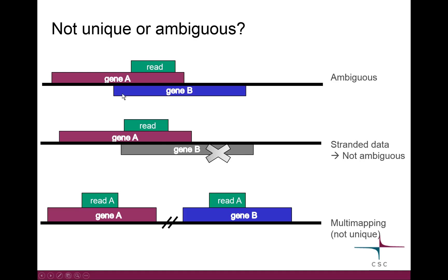The 'not unique' situation means a case where a read maps to several places. Here we have the same read mapping to gene A on chromosome 1 and to gene B on chromosome 6. So this is a multi-mapping read — it's not unique and it's not going to be counted.